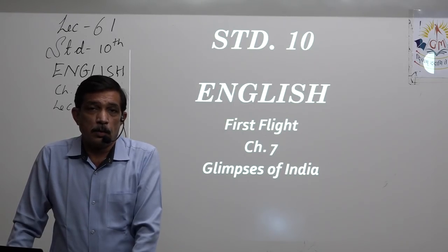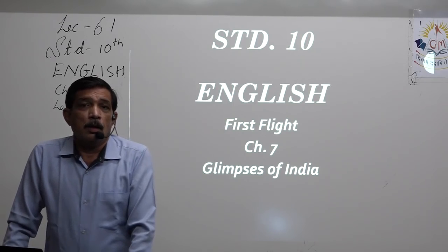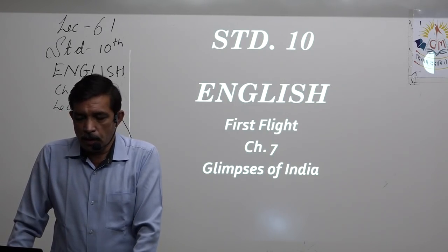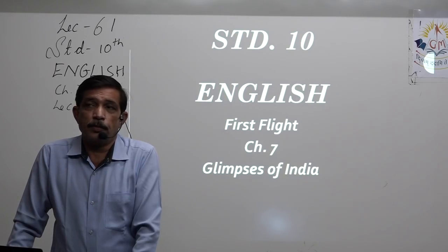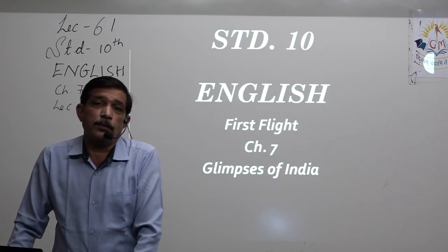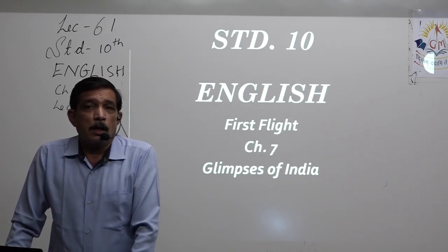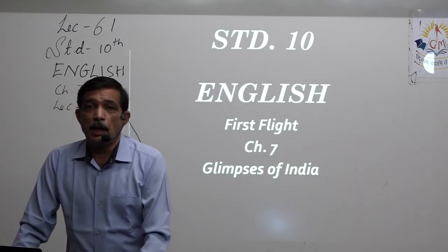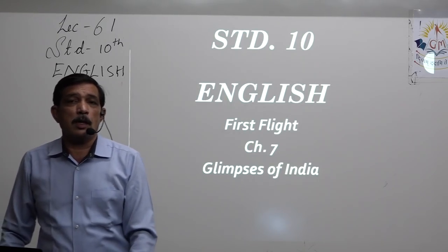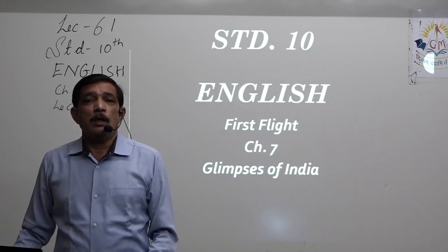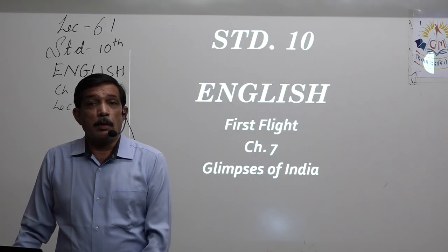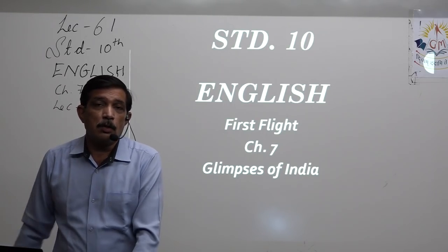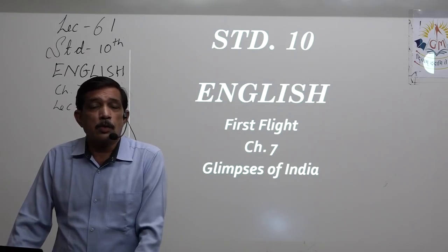We had started with chapter number 7 of the main book, that is First Flight. The name of the chapter is Glimpses of India. As the name goes, it shows us a bird's-eye view or a simple understanding of a particular place or region in India. Glimpses means there should be more than one region or place told to us about.